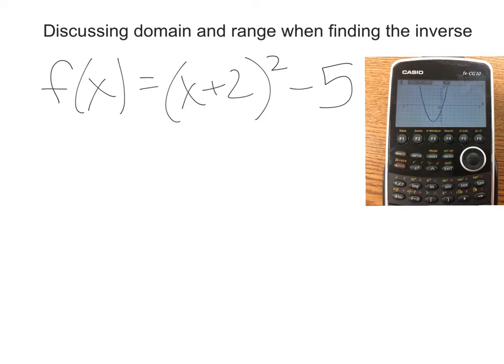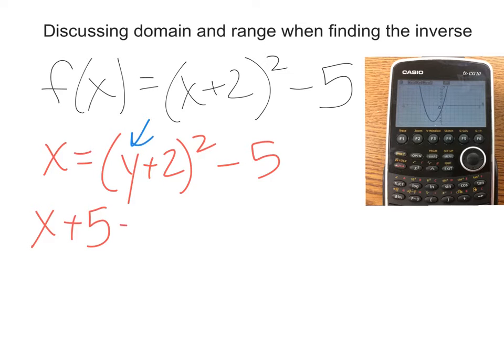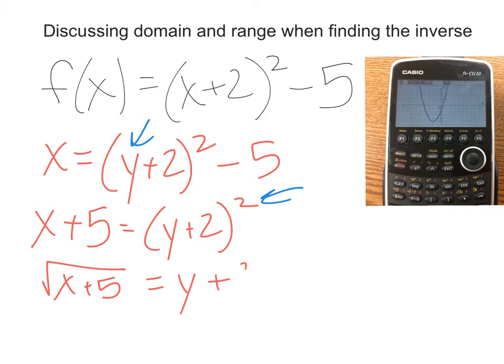So when we go to find the inverse, we switch x and y and then solve for y. So we would say that x is equal to y plus 2 squared minus 5. I'm going to now try and solve for my y value. So I do the opposite of minus 5, which is plus 5.